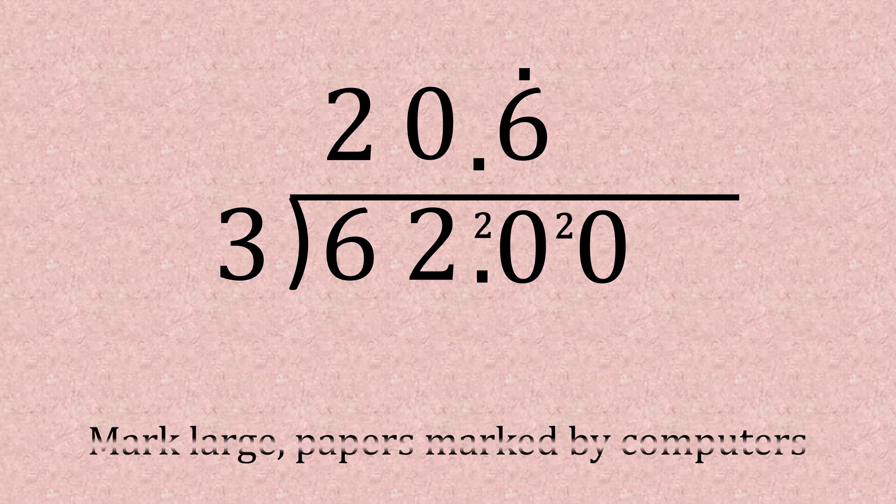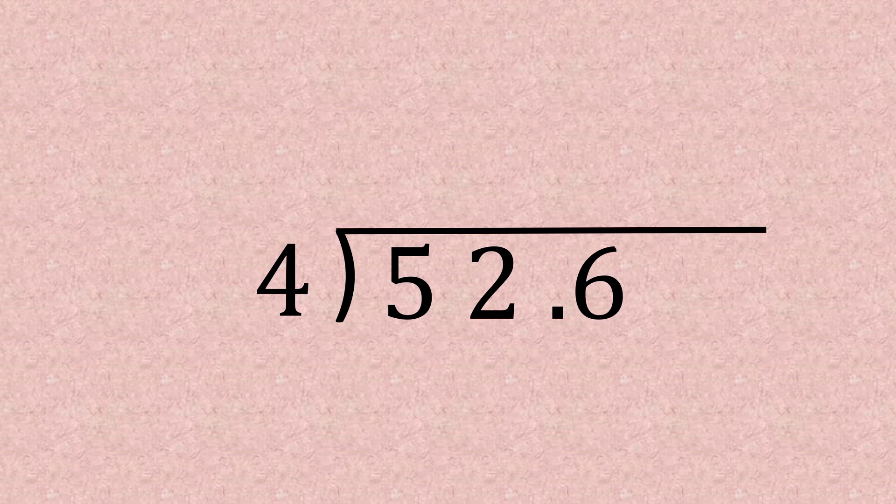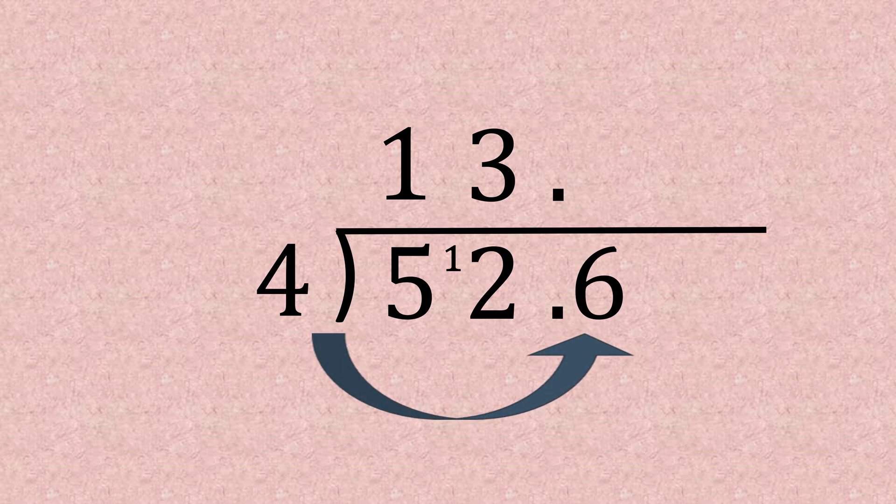Now we've got 52.6, we're going to divide this by four. Pop on the bus stop, in we go. Fours into five, that goes once with a remainder of one, carry over, giving us 12. 12 divided by four, that's lovely, goes in three times. Not forgetting to place the decimal point in line with the bottom. Fours into six, we know that goes once with a remainder of two.